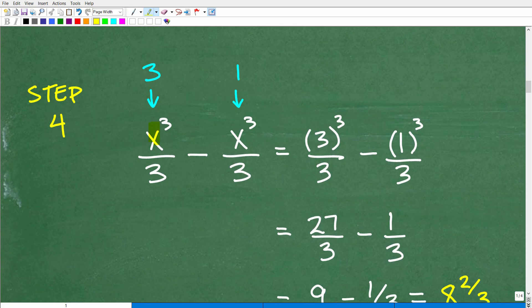Okay, so step 4, replacing this x with a 3 and this x with a 1. So let's go ahead and do that math here. Okay, so this is x cubed over 3. So that's 3 cubed over 3 minus this right here, we'll plug in a 1. So that's 1 cubed over 3.